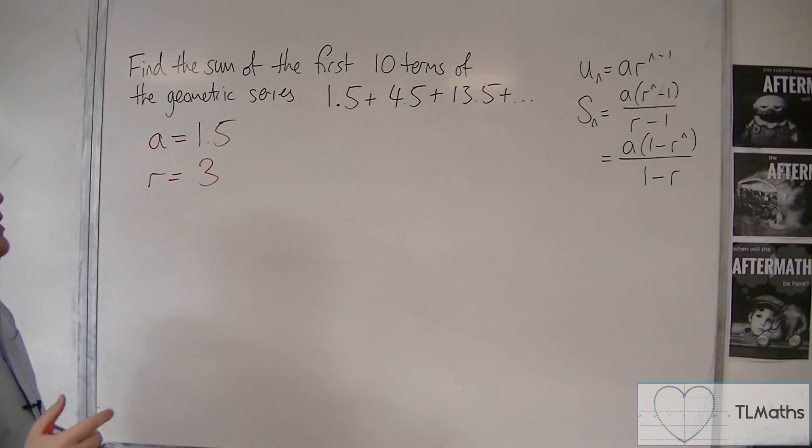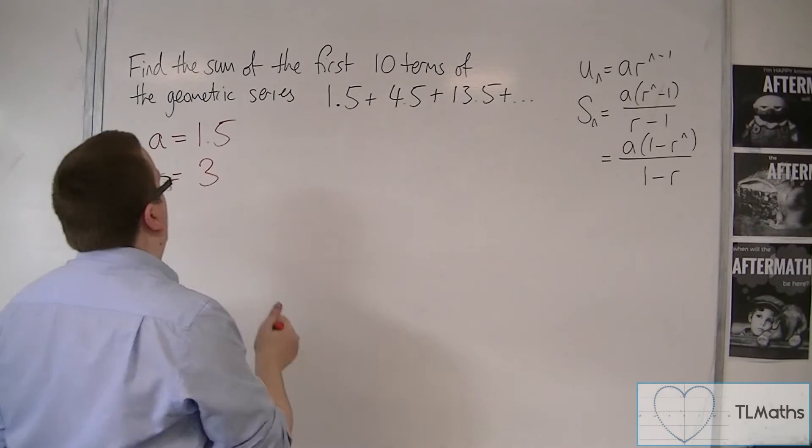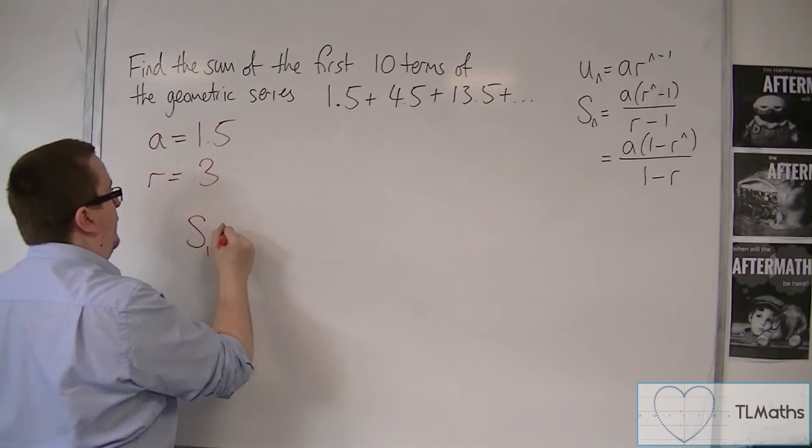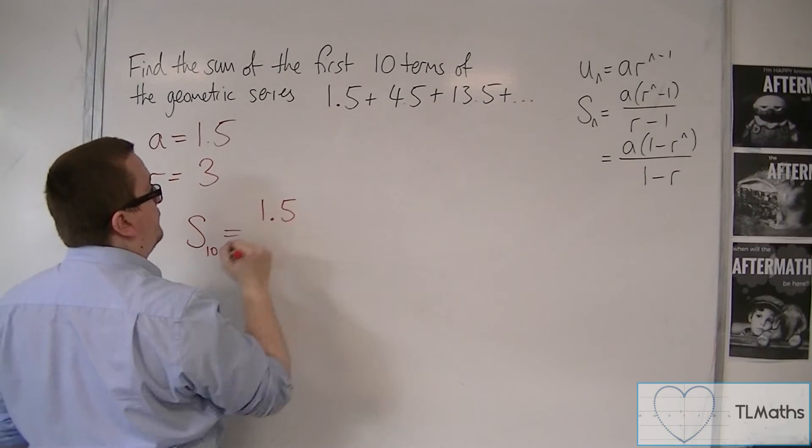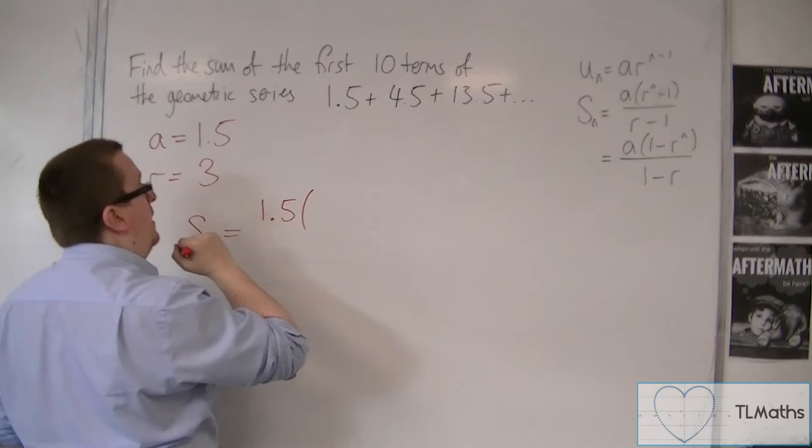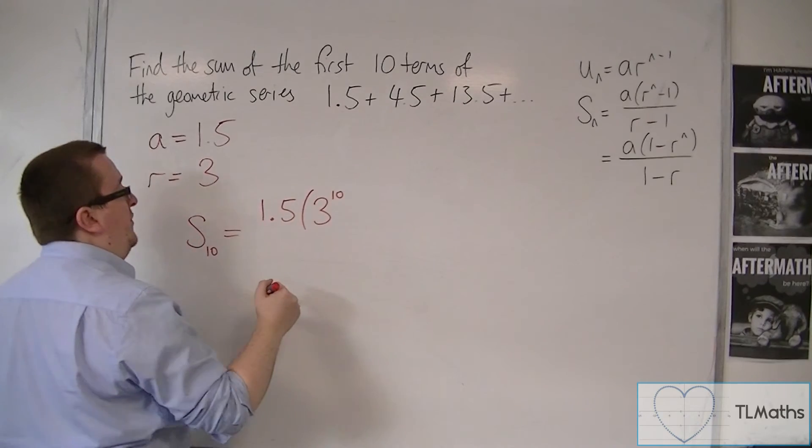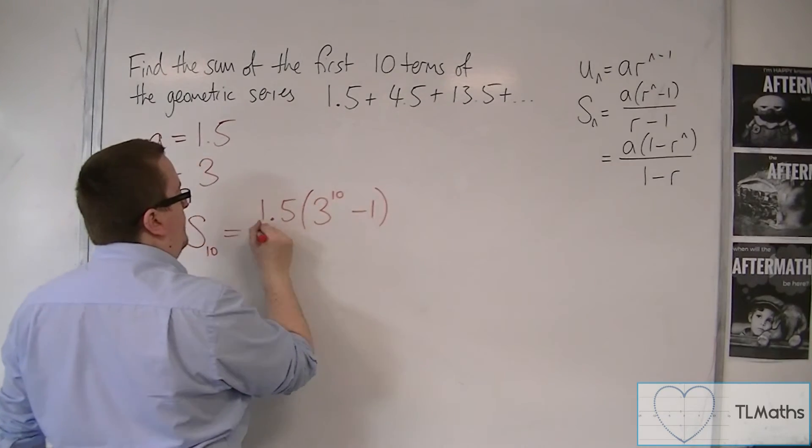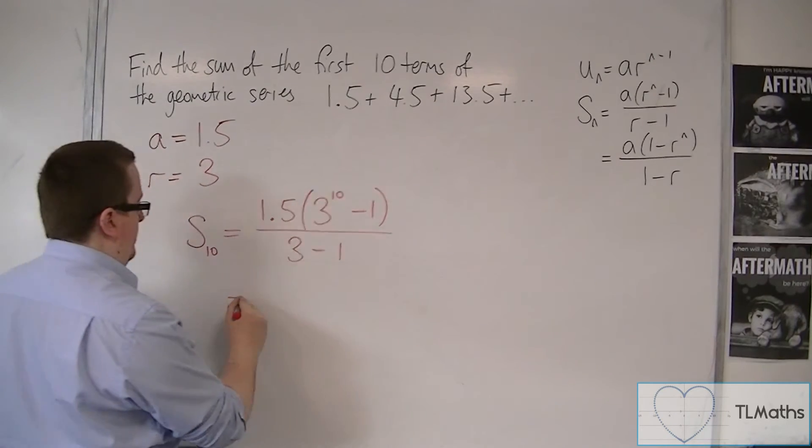So now you can use either of these two. So S10, the sum of the first 10 terms, is equal to A - I'm going to use the top one - times 3 to the power of n, so 3 to the power of 10, take away 1, all over 3 take away 1.